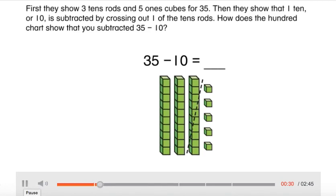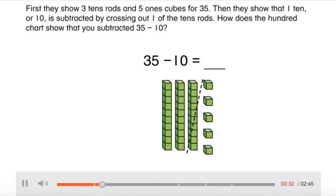First they show three tens rods and five ones cubes for 35. Then they show that one ten, or 10, is subtracted by crossing out one of the tens rods.